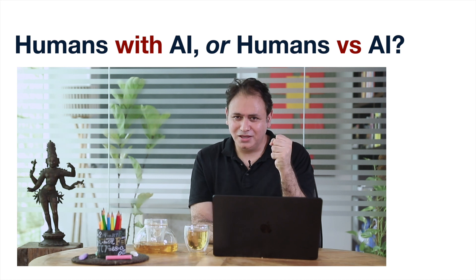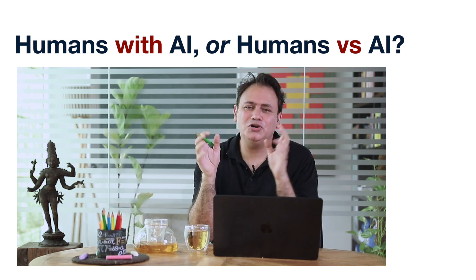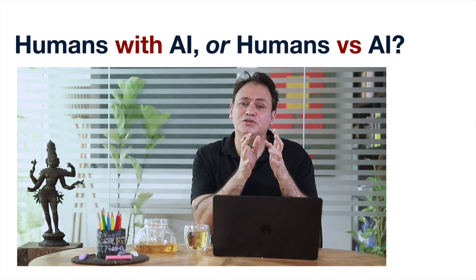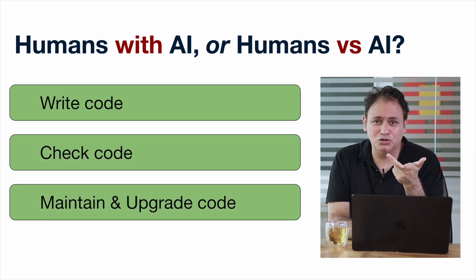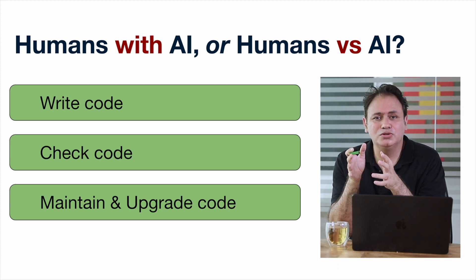There is of course an enormous amount of debate going on about whether it is humans with AI or humans versus AI. We're not going to get into that broad debate, but if you look at it in the context of writing code — writing code, checking code, maintaining code — yes, it is true that AI can help us. But we are the ones who have to decide what the elements of good code are, how we check code, and how we maintain code. We have to do that design process. Today AI can help us make that whole process more efficient, but the design of that has to be done by us.